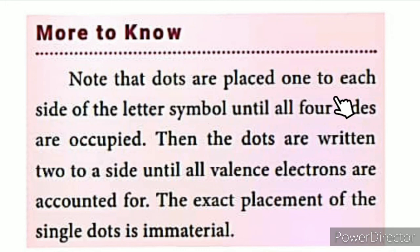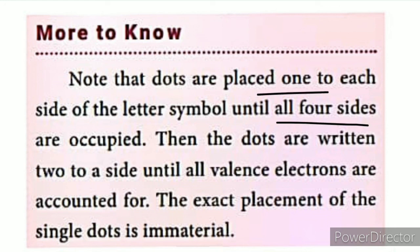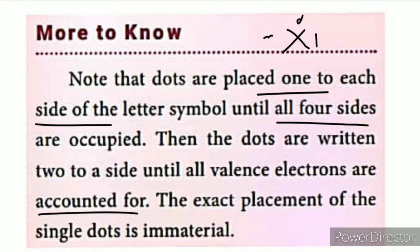Note that dots are placed one to each side of the element symbol until all four sides are occupied. Then a second dot is added to each side until all valence electrons are accounted for. The exact placement of single dots is immaterial — what matters is that all valence electrons are correctly represented around the symbol.